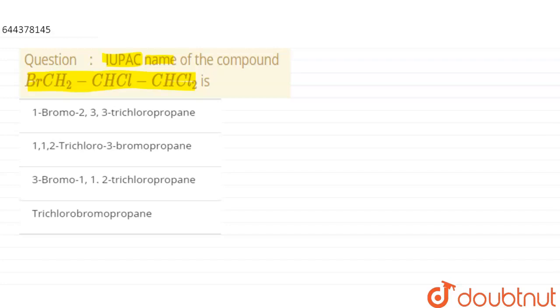Let us write the elaborated structure of this compound. We have bromine attached to a CH2 group, and CH having one chlorine, and CH with two chlorines. Now we have to write the IUPAC name of this compound.